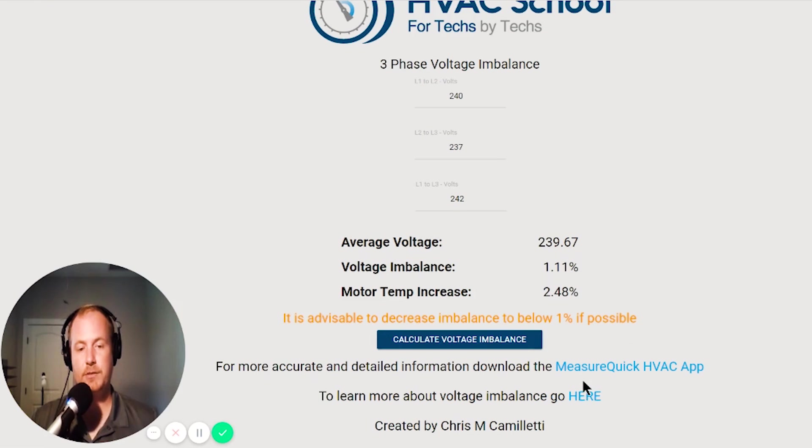What this is saying is it's advisable to decrease imbalance to below one percent if possible. So let's look and see if there's any way we can reduce this imbalance. But let's make it a little more extreme and we'll increase that range a little bit.